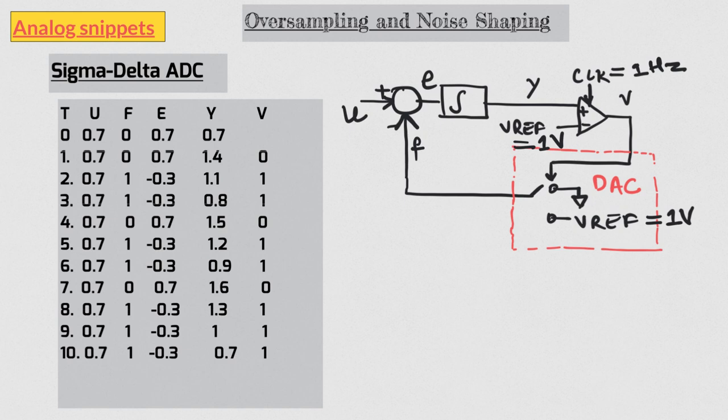Also note that in row number 9, both inputs of the comparator are at 1V. Ideally it is a metastable state for the comparator. But here I have arbitrarily assigned 1 to the output. You can as well assign a 0 if you wish. After the 10th cycle the output of the accumulator is same as the initial condition. So this sequence will repeat itself from now onwards.